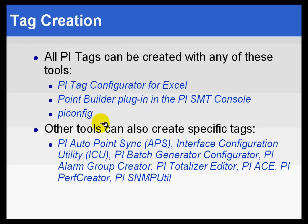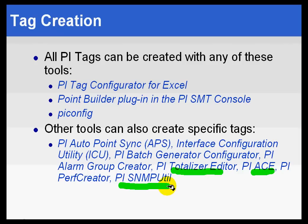So the things that you see here under the heading of Other Tools — those are simply those specific tools that we have to create specific types of tags, not general purpose tags, but tags with a specific context or specific function, such as totalizers, calculations, or SNMP data collection.